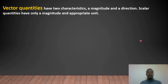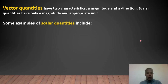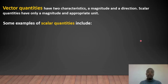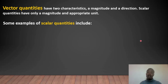A vector is characterized by both magnitude and direction. A scalar quantity has only magnitude with an appropriate unit. Some examples of scalar quantity involve only the direction of magnitude — that is, scalar quantities have magnitude but no direction.